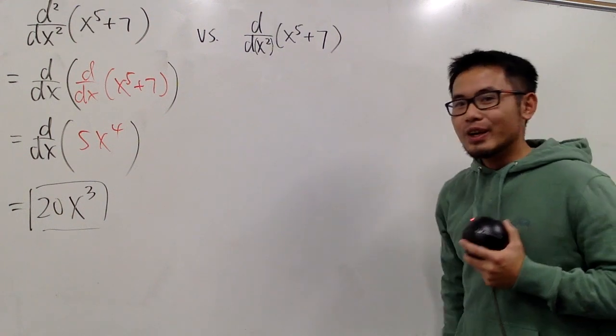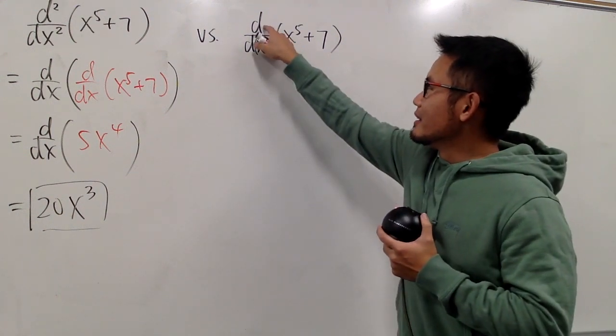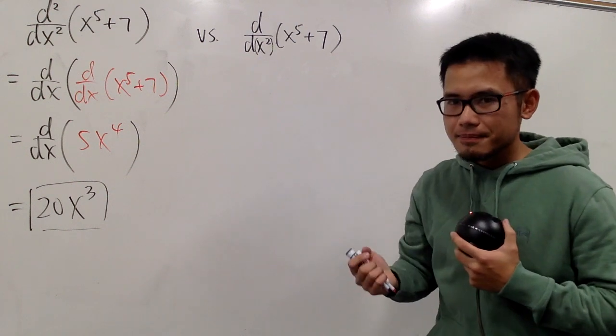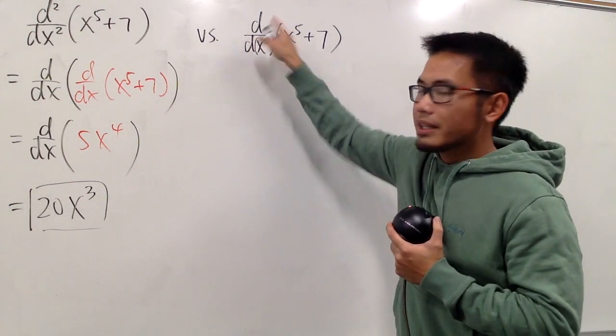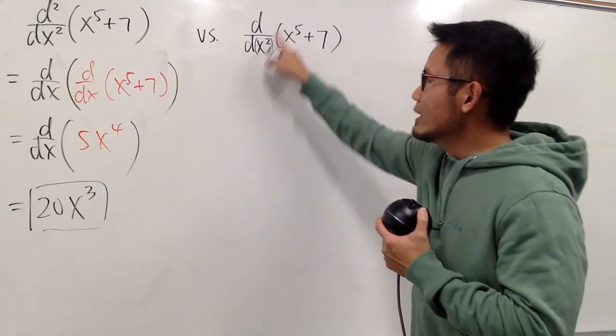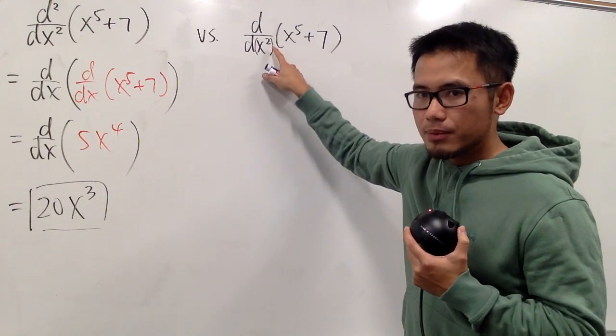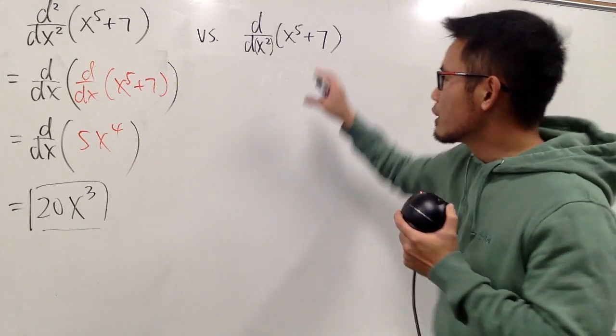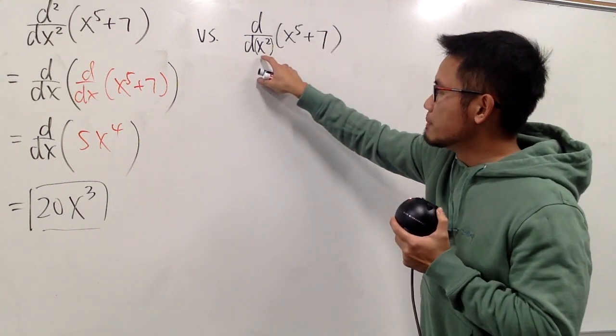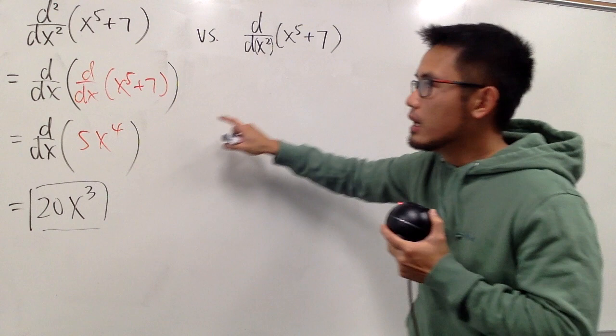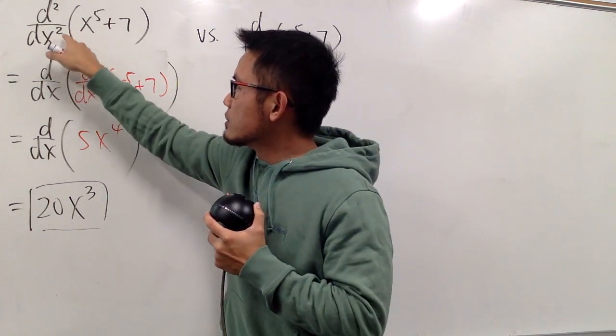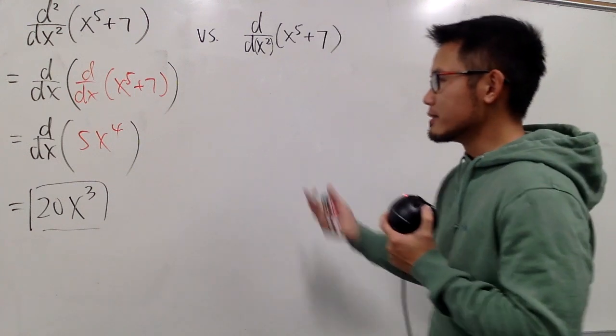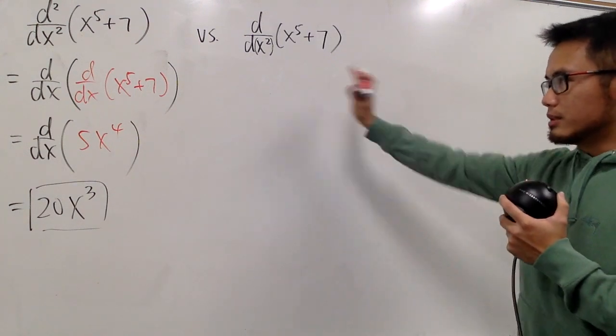Now, what does this mean when we are just having the d, and there's no number, and then this is dx²? When we have just the d, that means we are going to differentiate with respect to x squared now. Especially, we do have these parentheses to emphasize. We are going to differentiate this function with respect to x squared. This notation, dx², means that we have the dx twice on the bottom. So it's totally different things.